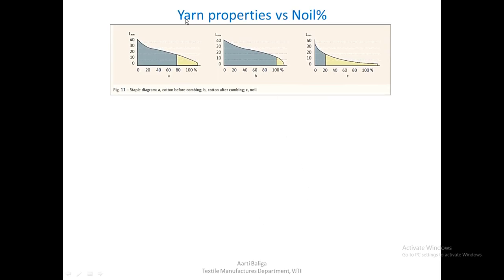This graph shows different Baer sorter diagrams for cotton before combing. If you compare that with cotton after combing, we see that the amount of short fibers has reduced drastically, but there are still some short fibers present in the sliver after combing. If you take a Baer sorter diagram for the noil that is collected, you would find that some long fibers — which are not supposed to be in the noil — have come into the noil. This would be a normal scenario for combed sliver and the noil in a Baer sorter diagram.